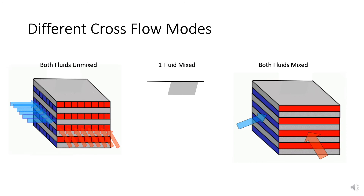There are four systems to examine, represented by three diagrams. First, on the far left, is the completely unmixed system in which neither fluid is allowed to mix with itself — represented by squared-off sections where the fluid flows into each square but is unable to mix with adjacent squares. In the real-world heat exchanger, fins prevent mixing within each fluid. Then we have the one-fluid-mix systems, of which there are two: one for the hot fluid being mixed and one for the cold fluid being mixed. Finally, there's the both-fluids-mix case, in which both hot and cold fluids are allowed to mix freely amongst themselves.